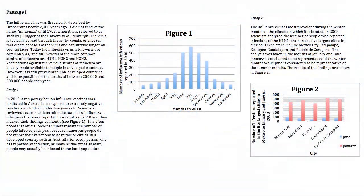This is the solution guide to the second worksheet covering biology science passages typically found on the science section of the ACT exam. The first passage on this biology worksheet is about the influenza virus. The passage tells us when the flu virus was discovered, how it is spread, the different strains of the influenza virus, and how the flu is still responsible for deaths in some undeveloped countries of the world.